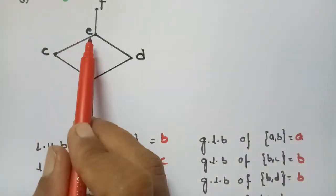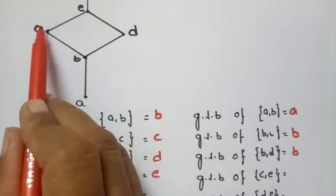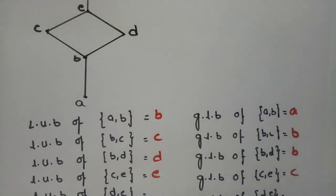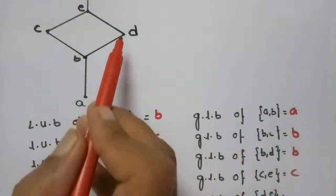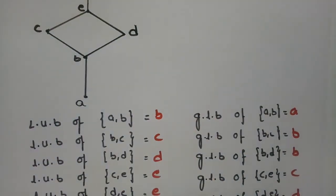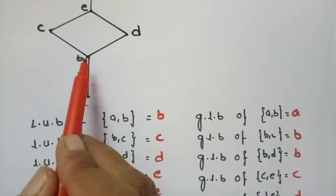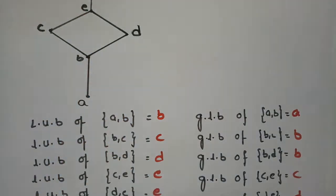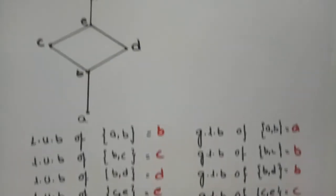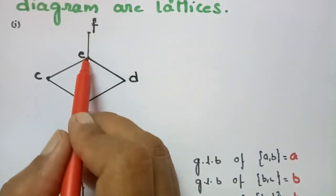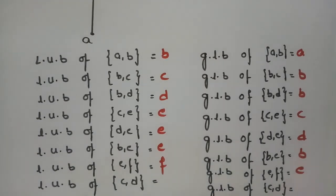Coming to (c, e): the upper bound is e and the lower bound is c. Next, (d, e): the upper bound is e and the lower bound is d. Coming to (b, e): the upper bound is e and the lower bound is b. Coming to (e, f): the upper bound is f and the lower bound is e.